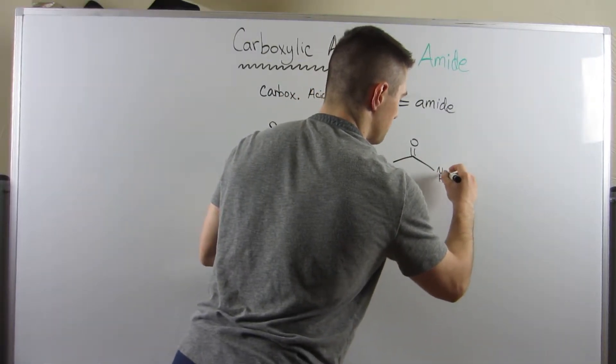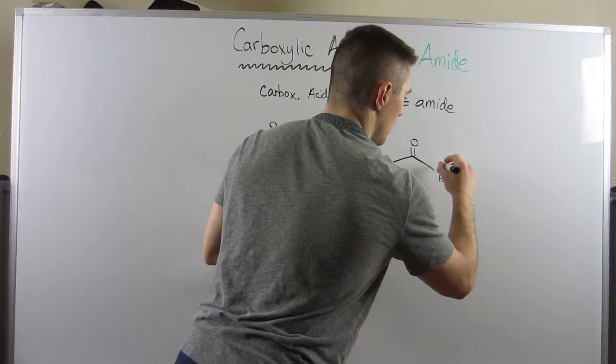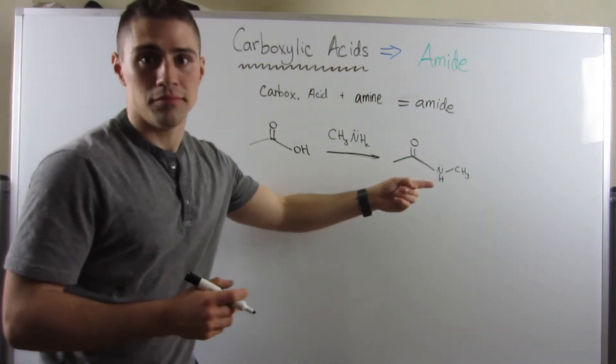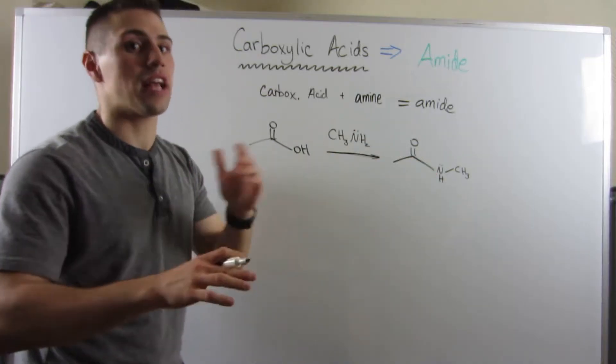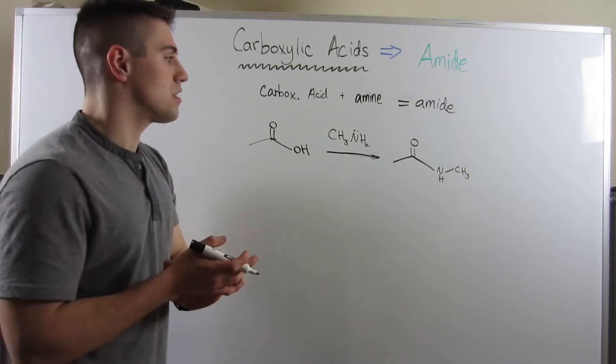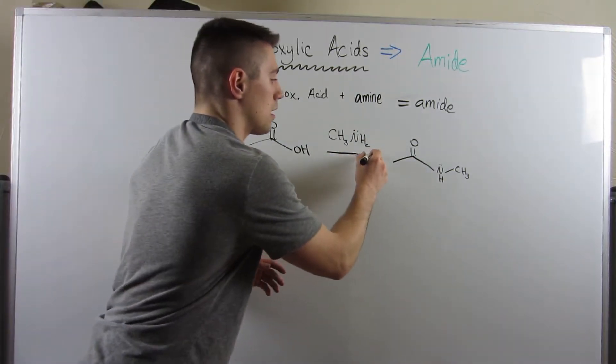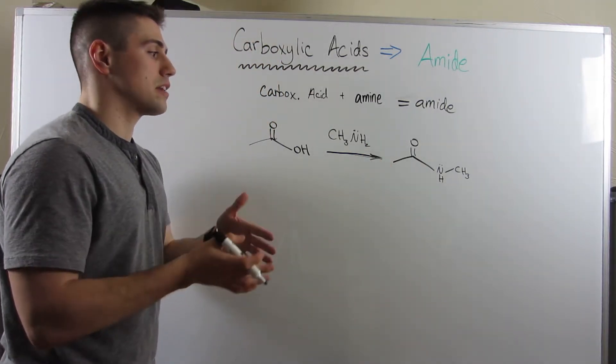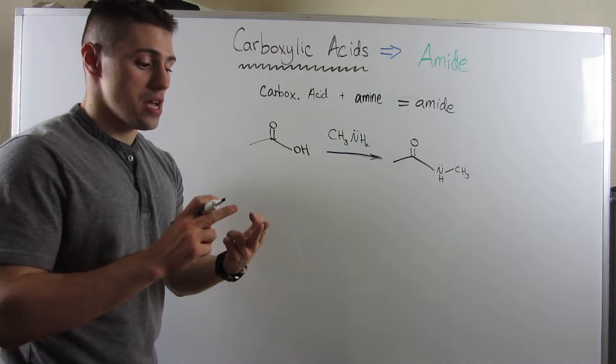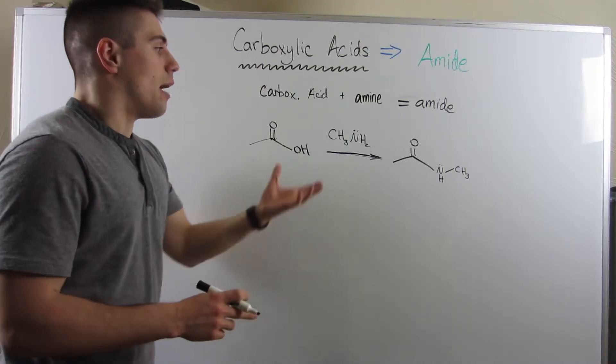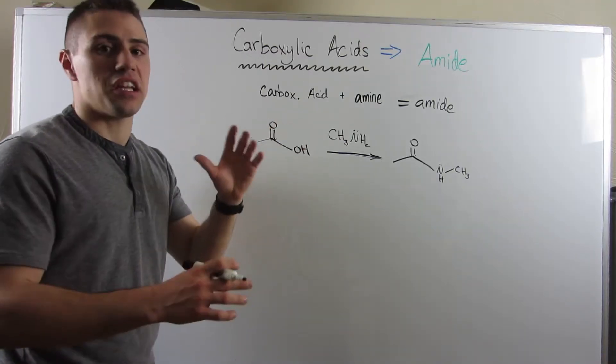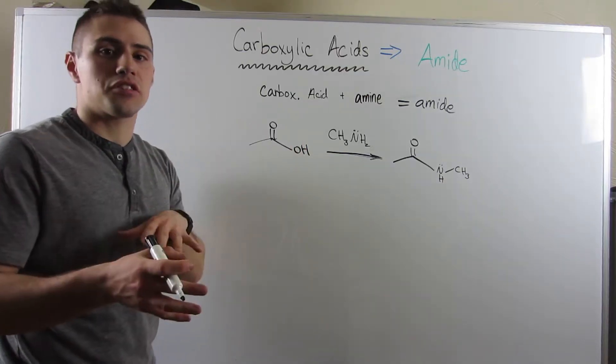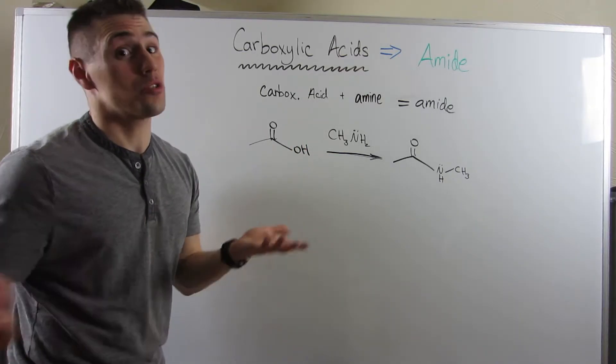If you want to think about it, amides are kind of like esters, but with a nitrogen as opposed to an oxygen. Here's the interesting thing: as opposed to the mechanisms we've done with esters and acid anhydrides, amines are basic. So you can't do this in an acidic environment because they are bases. You'll see how this goes, but the mechanism is actually shorter, which is a good thing.